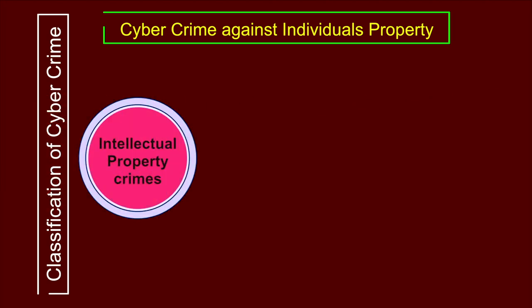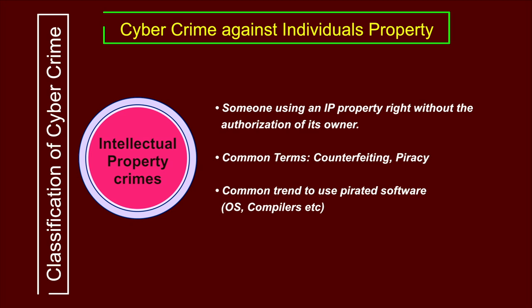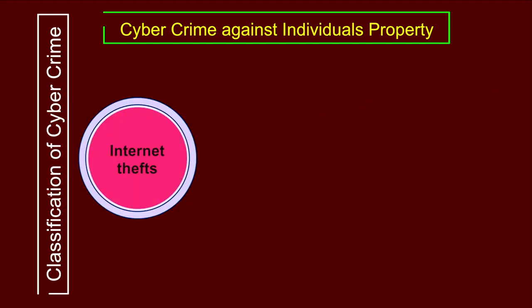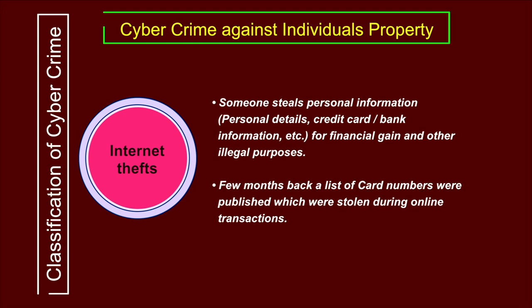The fourth crime is intellectual property crime, also referred to as IP crime — using intellectual property without authorization of its owner. Common terms are piracy or counterfeiting. Using pirated software, whether operating systems, compilers, or application software, constitutes a crime. The fifth and last crime under individual property is internet theft: stealing personal information like personal details, credit card details, and bank information for financial gain. For example, thousands of credit card and account numbers were published online after being stolen during e-commerce transactions.